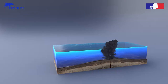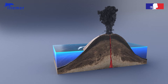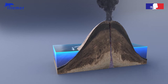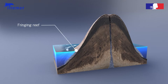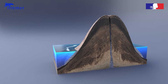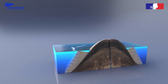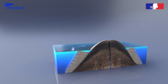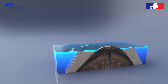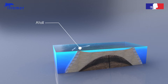Darwin observed that both fringing and barrier reefs tended to surround volcanic islands. He reasoned that reefs initially formed on the fringe of volcanic islands. When the volcano became extinct and slowly subsided below sea level, the reef became a separated barrier reef, and once the volcanic edifice was entirely buried, it eventually became an atoll.